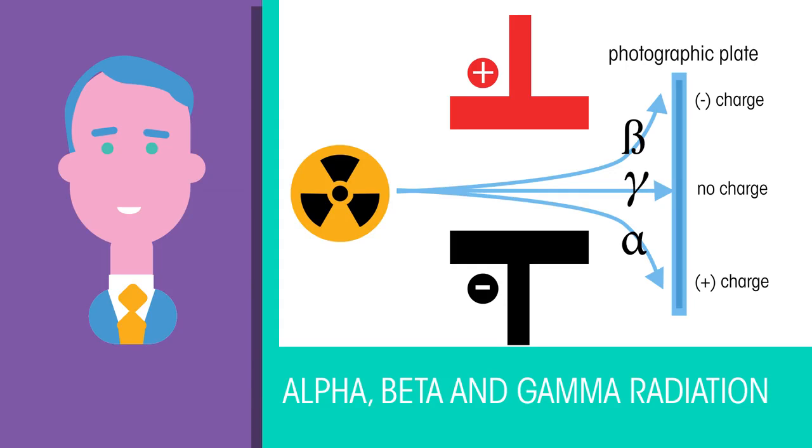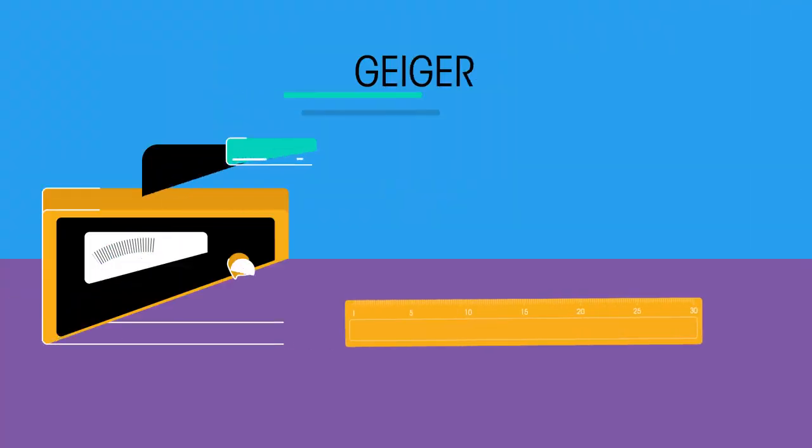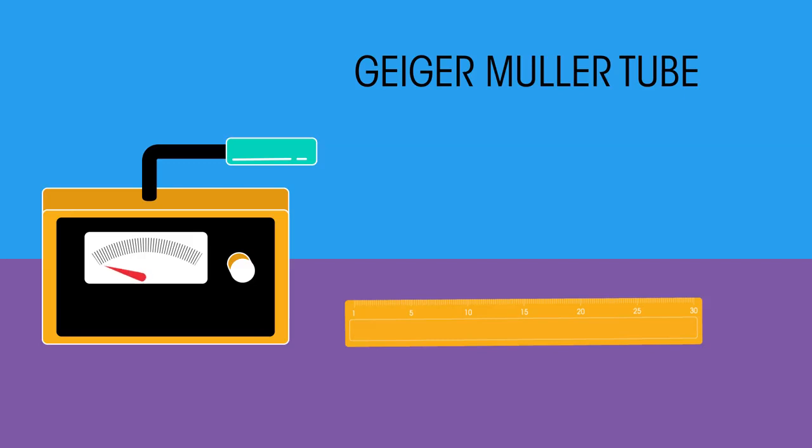Here we will look more closely at their properties of penetration of matter. We can detect the presence of radiation by using a Geiger-Müller tube connected to a counter. The counter records the number or rate at which radiation passes into the tube.